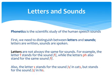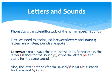We need to distinguish between letters and sounds. Letters are written symbols while sounds are spoken. Letters are not always the same as sounds. For example, the letter F stands for the sound /f/, while the letters P and H also stand for the same sound /f/. Also, the letter S stands for the sound /s/ in 'cats' but stands for the sound /z/ in 'his'.